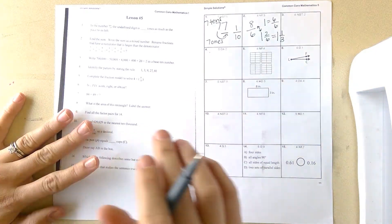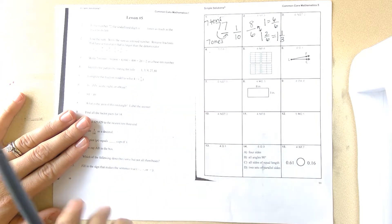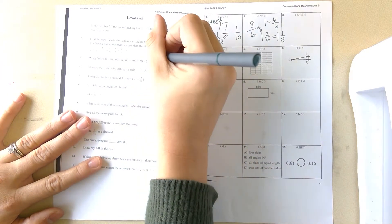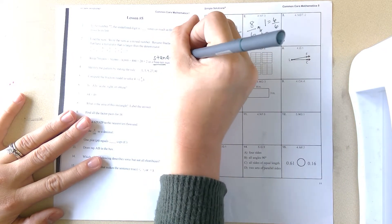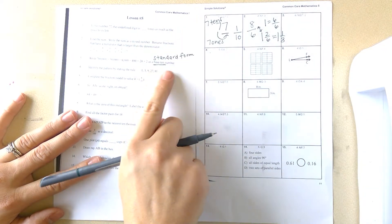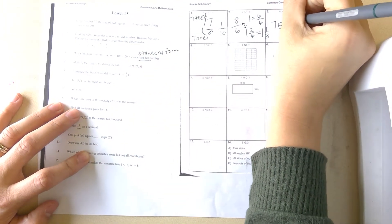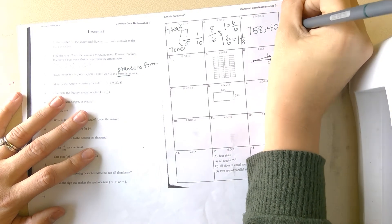Number three: write seven hundred thousand plus fifty thousand plus eight thousand plus four hundred plus twenty plus two as a base ten number. When they say base ten number, that means standard form—it's a plain old number. Anytime they ask for a base ten number, they want standard form. This would be 758,422.